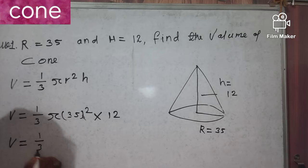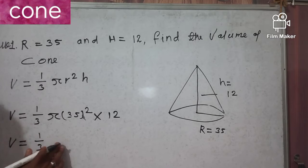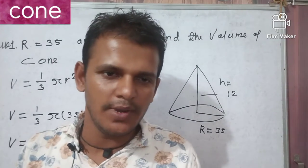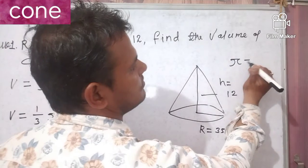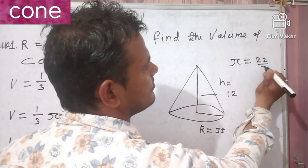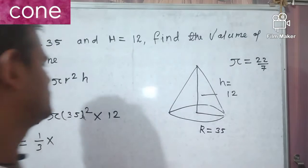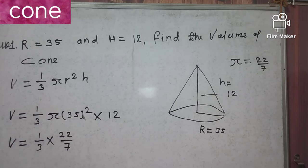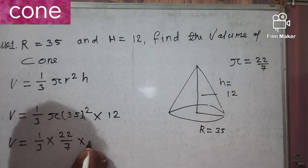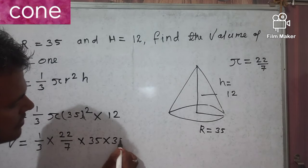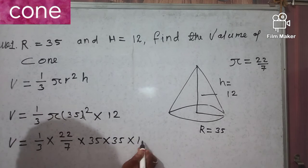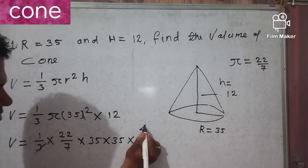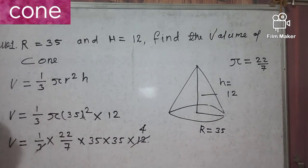Volume is equal to one-third times pi, and we write pi as 22 over 7. So pi equals 22 over 7. Now 35 squared is 35 times 35, and the height is 12. We can simplify: the 3 in the denominator divides into 12 to give 4, and the 7 in the denominator divides into 35 to give 5.